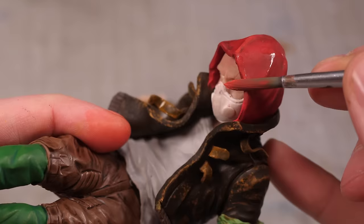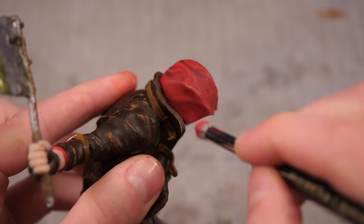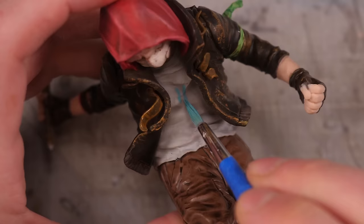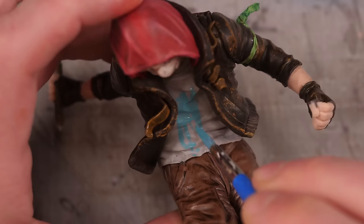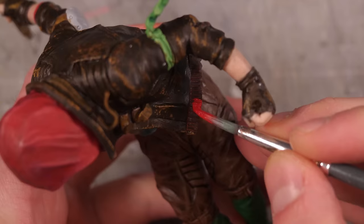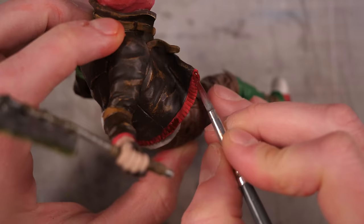I'll then highlight the edges of the hood and give it an aggressive dry brushing to make it look nice and faded before adding the light blue symbol on the front of Aiden's t-shirt.